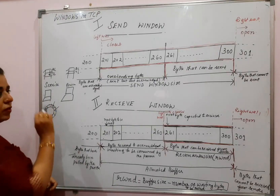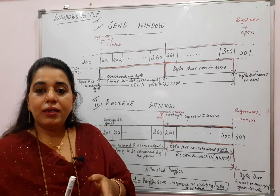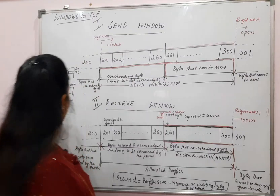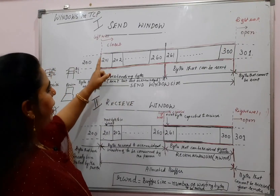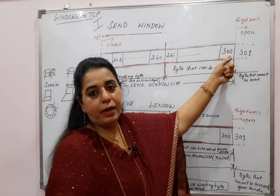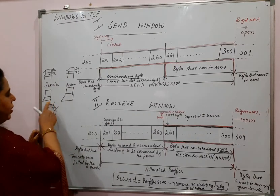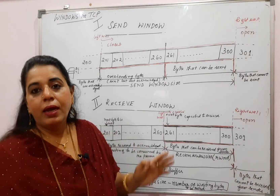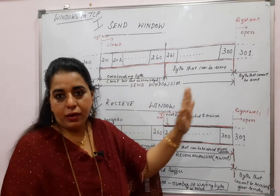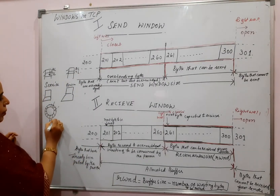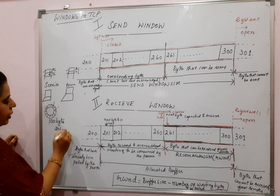What does this buffer consist of? It consists of bytes only, but we have to indicate the different categories of bytes. If this is the buffer at the sender side, assume for simplicity that the first byte number is 201 and the last byte number is 300 — so the buffer capacity is 100 bytes. In that 100 bytes, byte numbers 201 to 260 are already sent. The sender has sent 60 bytes to the receiver.